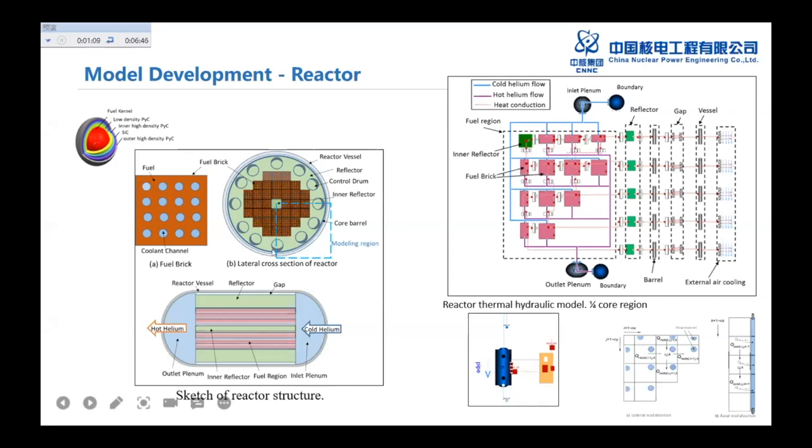And due to the geometry, they modeled the one quarter of the region in this thermohydraulic modeling. And each reflector, the fuel bricks and the core barrel, which is steel, made by steel. And the vessel, reactor pressure vessel and external air cooling. And also the plenum, inlet and outlet helium plenum are modeled here.